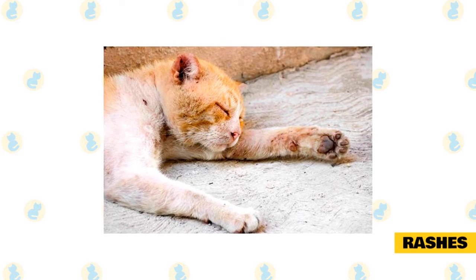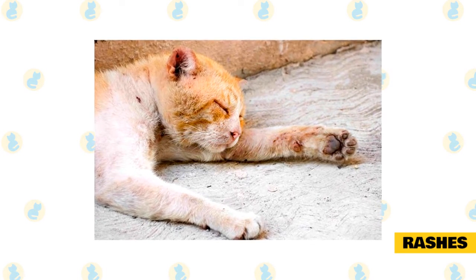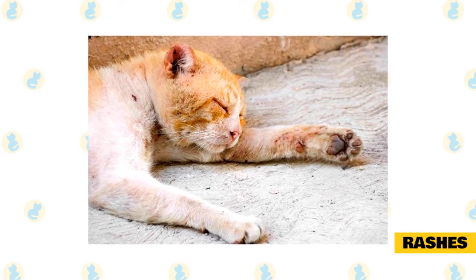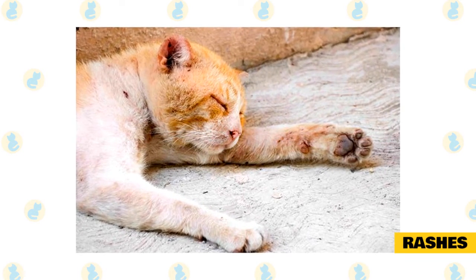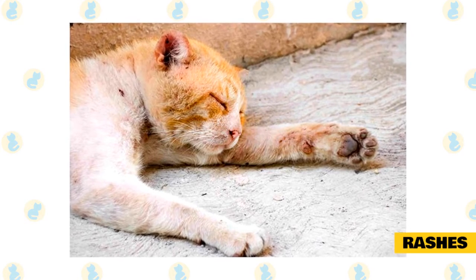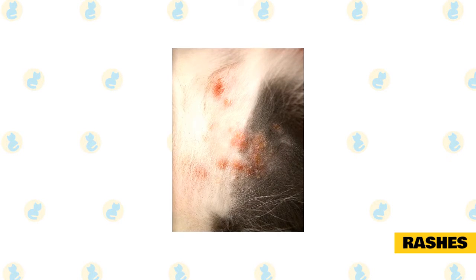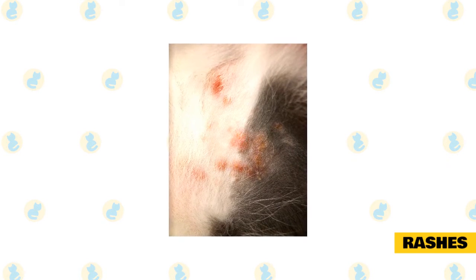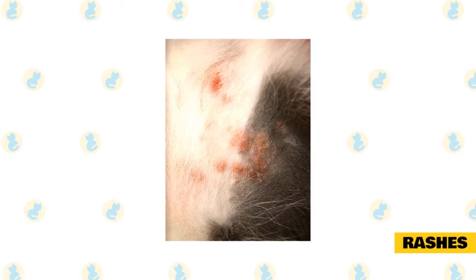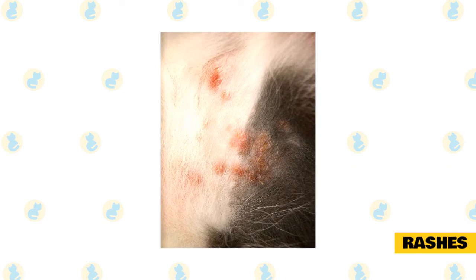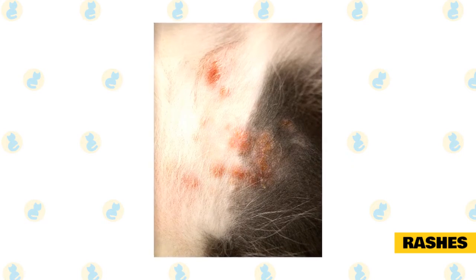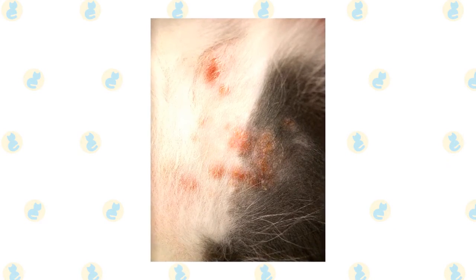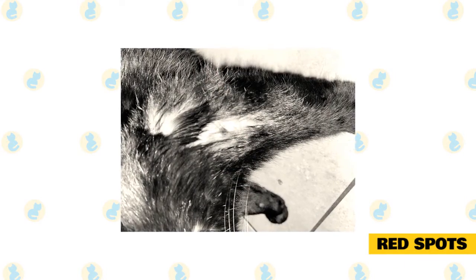Rash is another extremely broad term that can encompass everything from hives to pustules to fresh bruising. In general, people use the term to describe cat skin conditions that are flat, red, and encompass a medium to large area of skin. Rashes are typically associated with inflammation, which can either be a primary problem like allergies or a secondary problem. As with sores, it is important for your veterinarian to visually inspect any rashes on your cat, and tests may also be necessary before a diagnosis and treatment recommendation can be made.